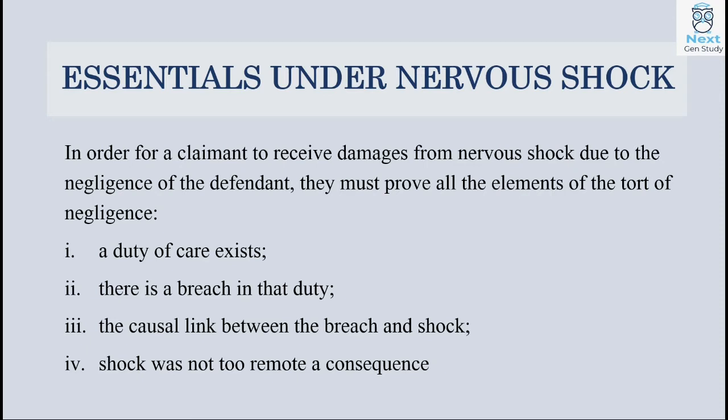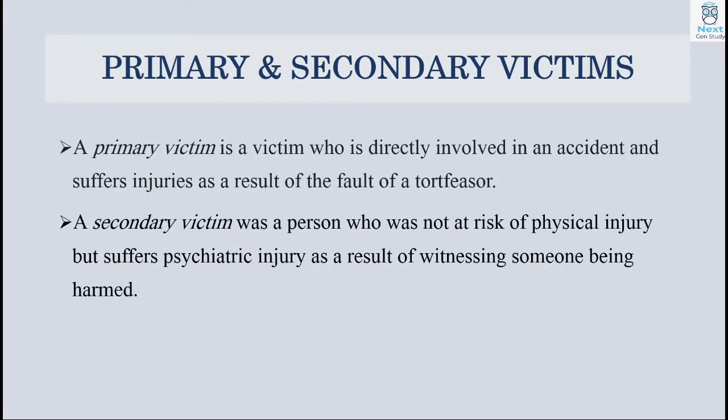The plaintiff must also prove that the shock was not too remote a consequence. There are two types of victims who claim damages under nervous shock: primary victims and secondary victims. The primary victim is a person who is directly involved in an accident and suffers injury. The secondary victim is a person who is not actually at risk of physical injury but suffers a mental or psychiatric injury as a result of witnessing someone being harmed.